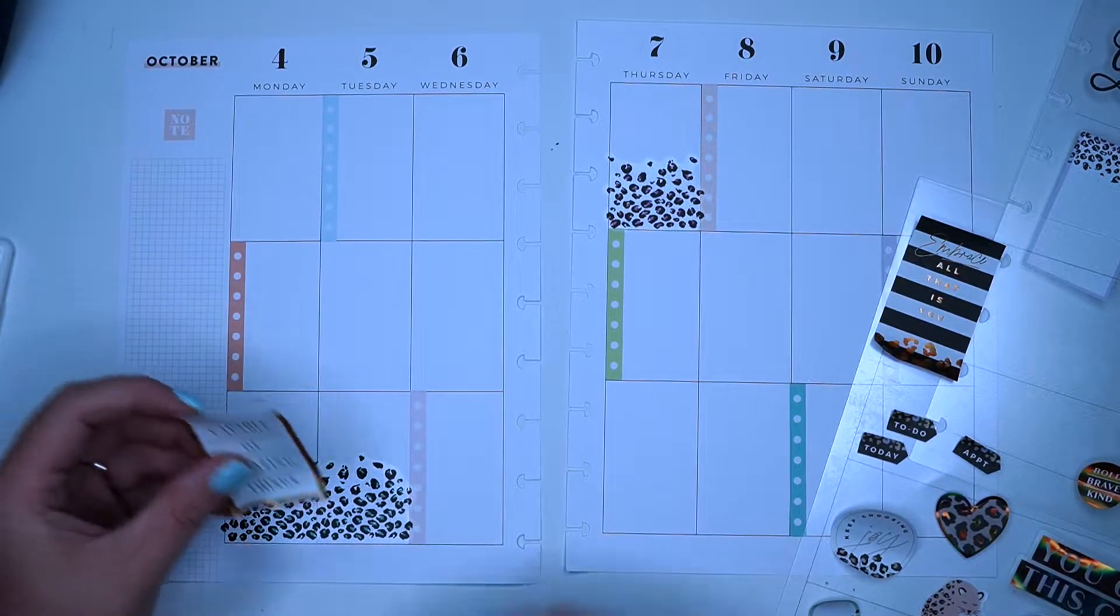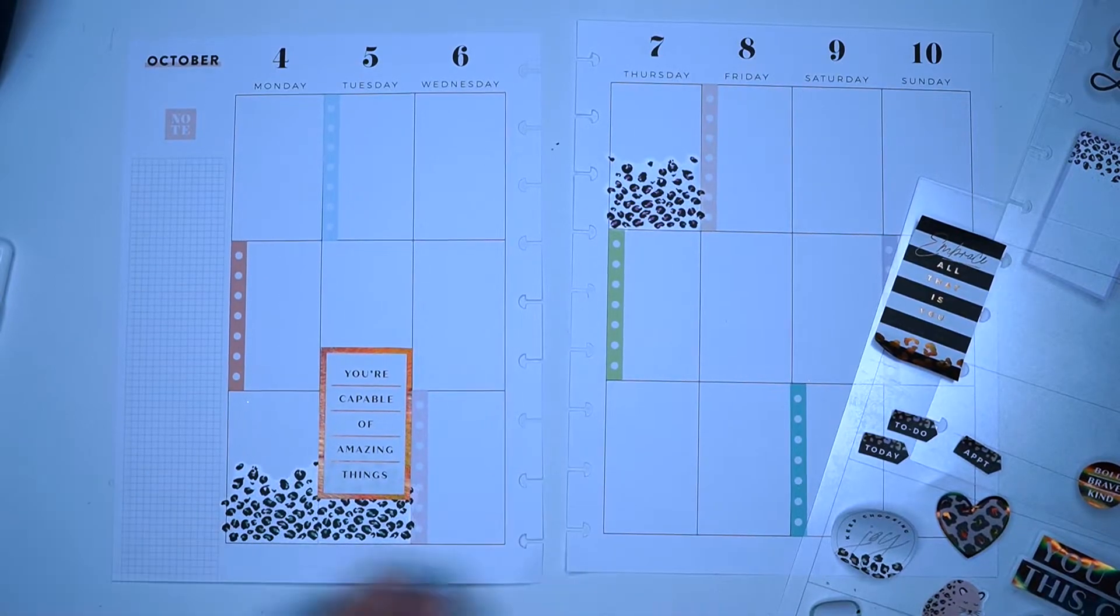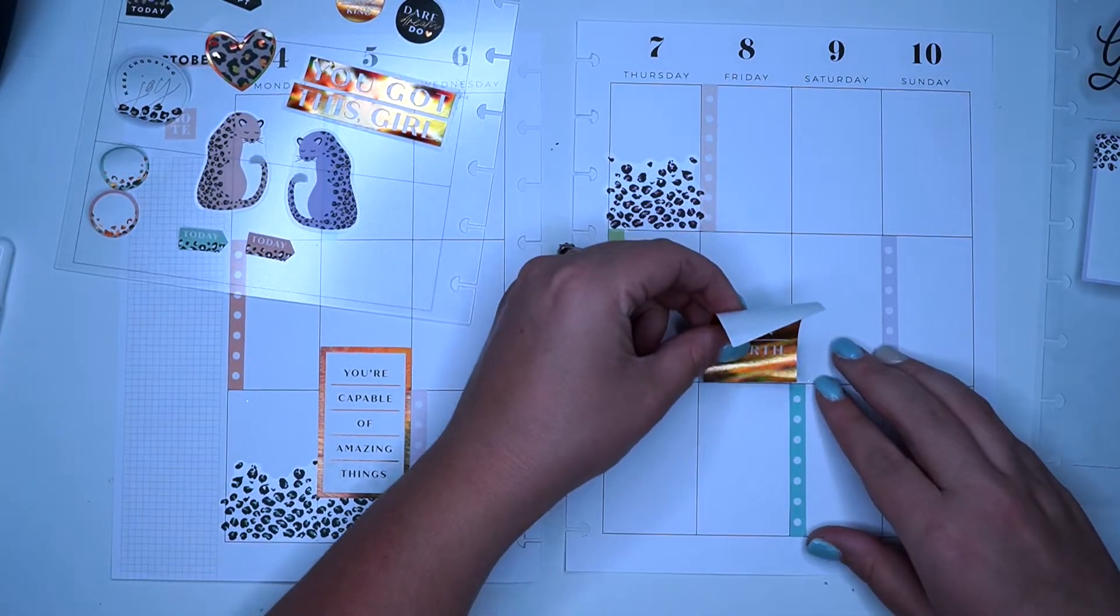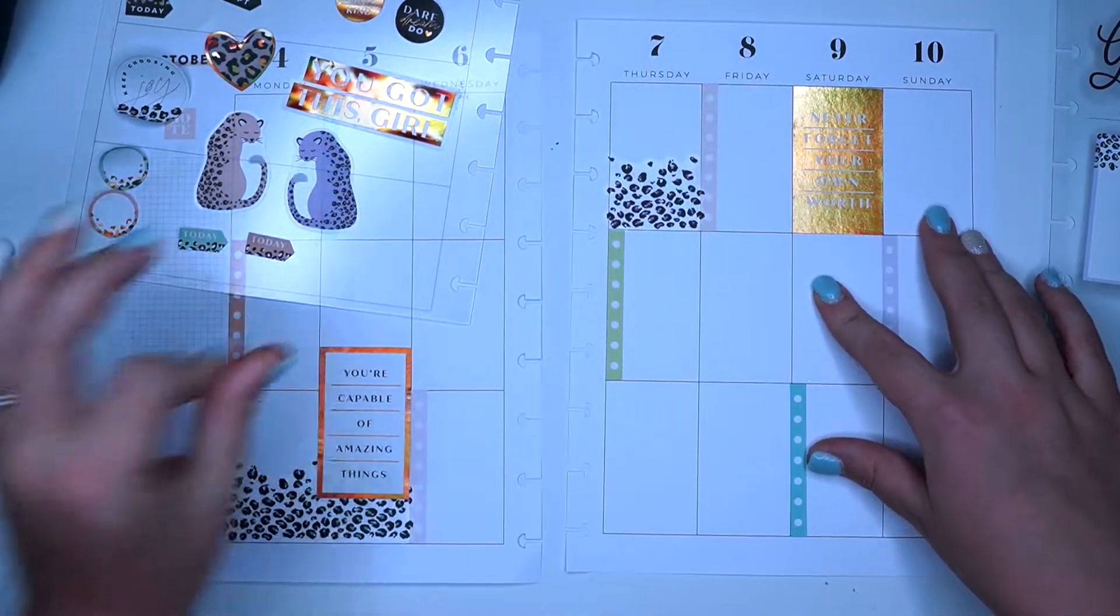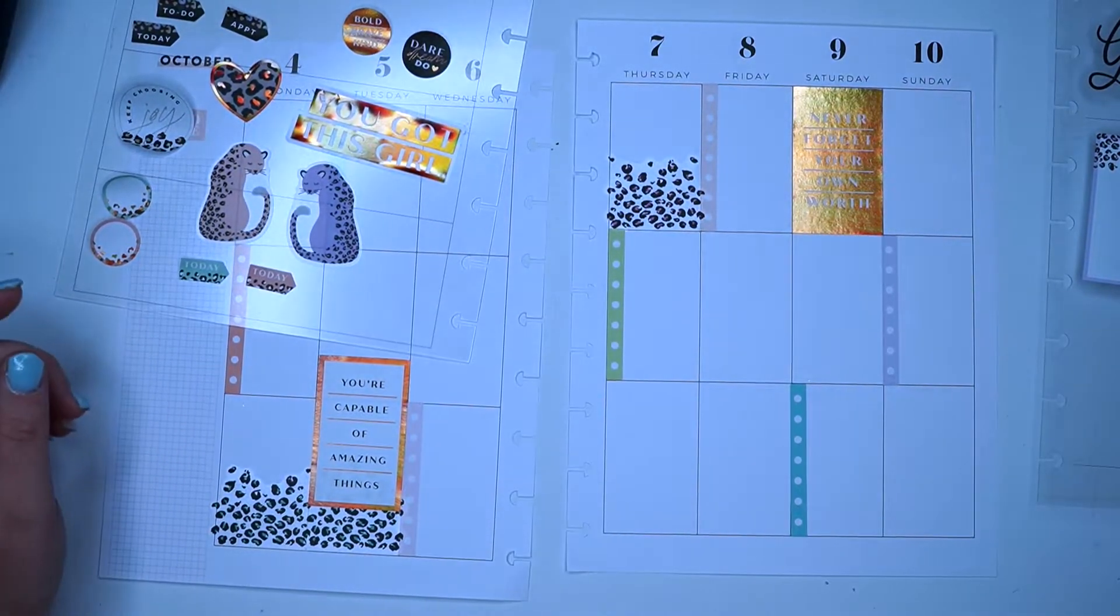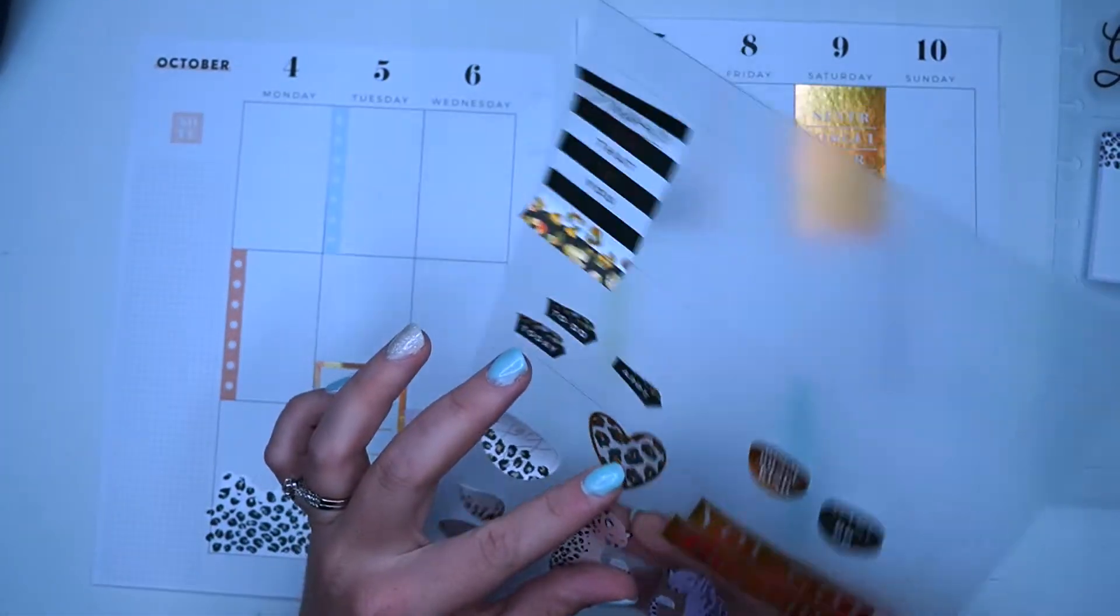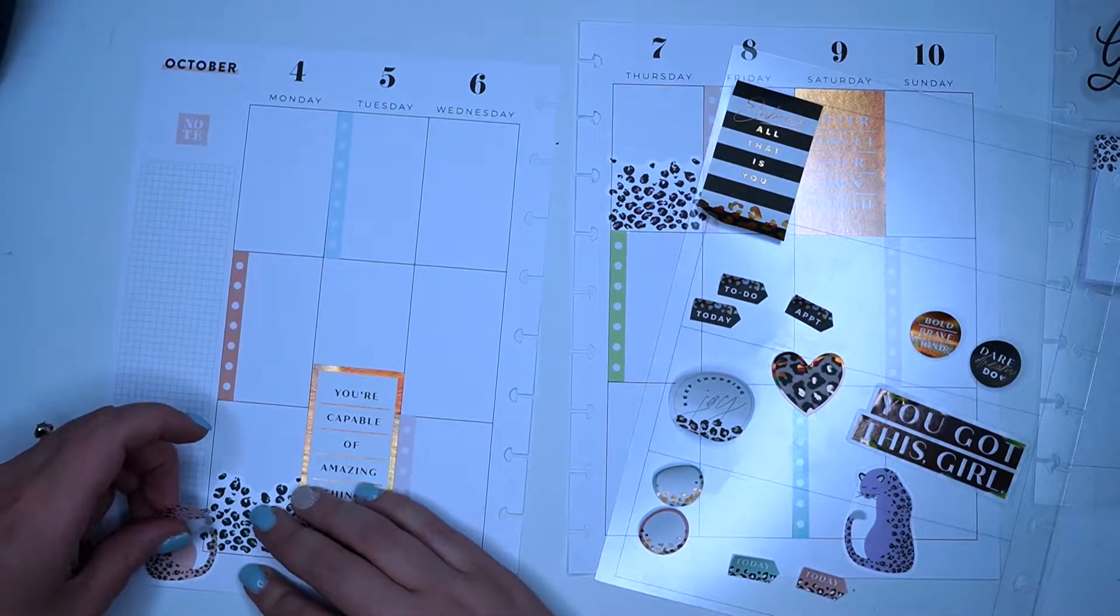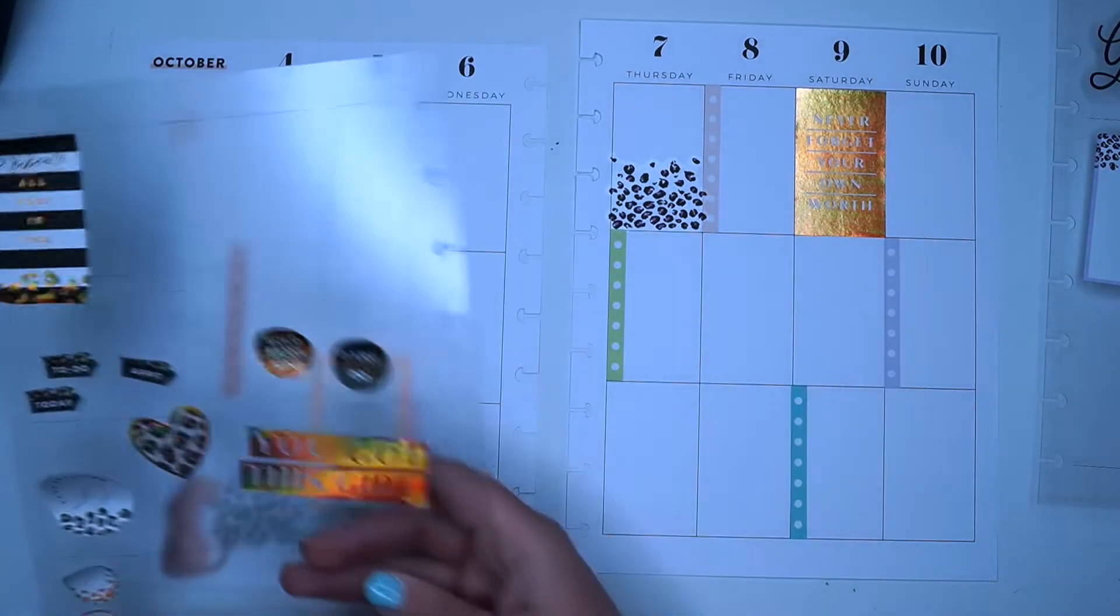This one I'm thinking I'm going to put up top. I'm thinking I'm going to put this guy right here, and then this full hollow one I'm going to put over on this side of the page, right on Saturday. I'm going to put this leopard guy down here. I just think that's kind of cute with that print.